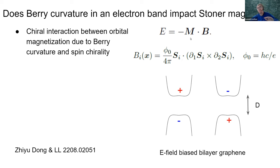This interaction is allowed by symmetry because it looks like a general electromagnetic interaction between a magnetic moment and external magnetic field. But both m and b play unusual roles: b is not an external field — it is the intrinsic field arising from twisting of spin texture, and m is the orbital magnetization due to Berry curvature. Because of linear coupling, it tends to induce chirality.